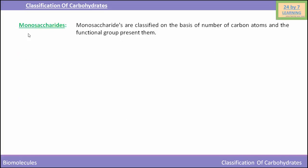Monosaccharides are further classified on the basis of the number of carbon atoms they contain and the functional group present in them. On the basis of carbon atoms, monosaccharides are classified as: trioses (three carbon atoms), tetroses (four carbon atoms), pentoses (five carbon atoms), hexoses (six carbon atoms), and heptoses (seven carbon atoms).